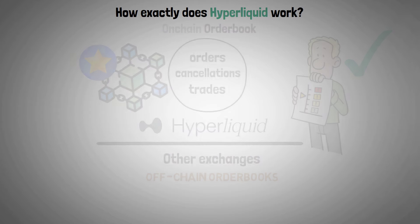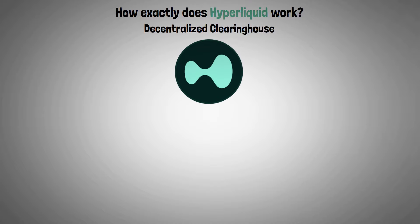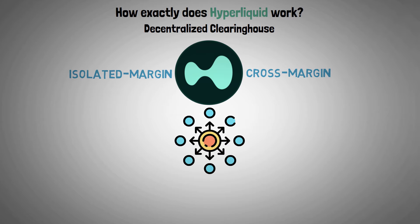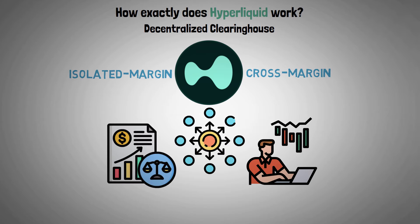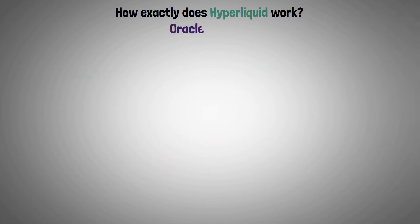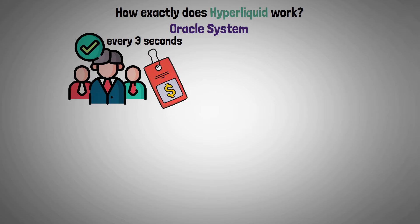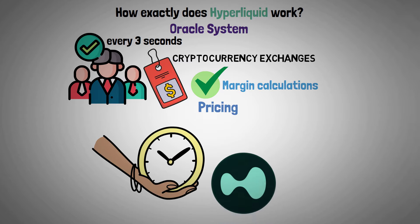Decentralized clearinghouse: Hyperliquid facilitates both cross-margin and isolated-margin trading by using a decentralized system to manage users' positions and margin balances. Oracle system: every three seconds, validators release spot prices from well-known cryptocurrency exchanges, guaranteeing that margin calculations and pricing are current throughout the Hyperliquid platform.